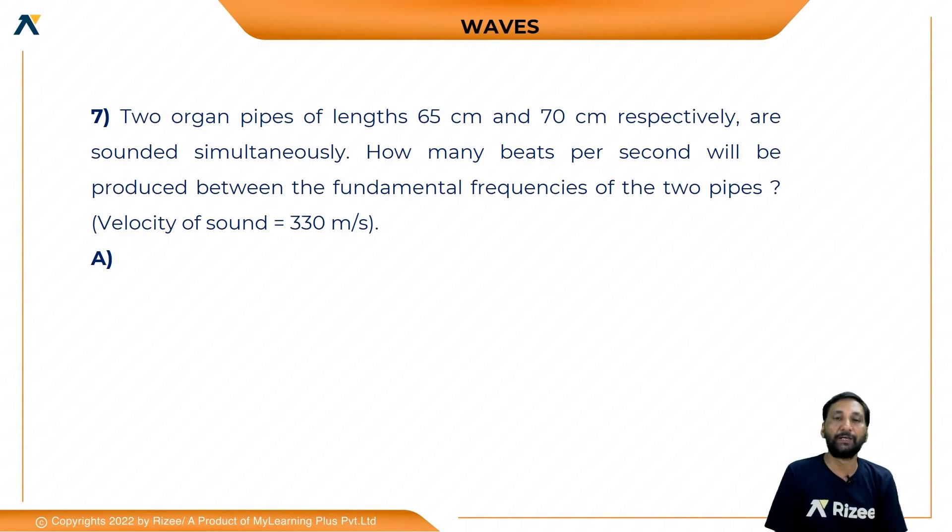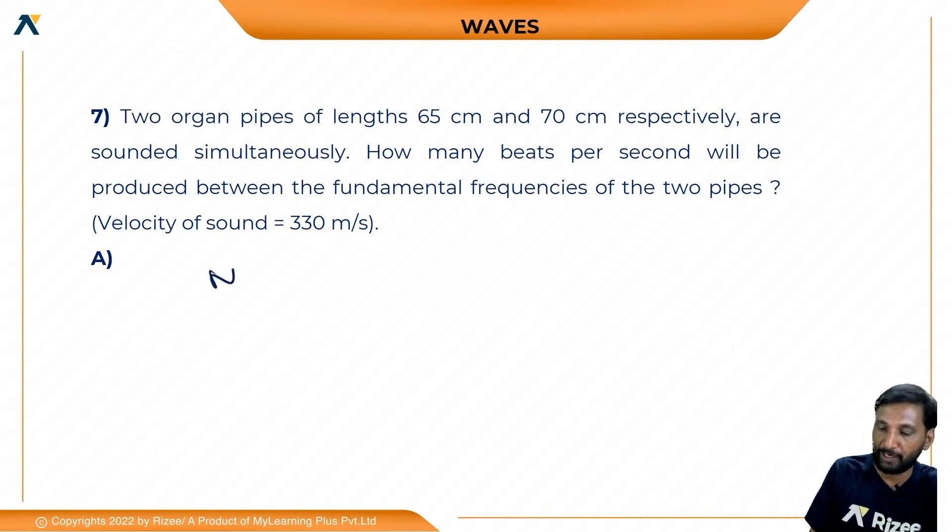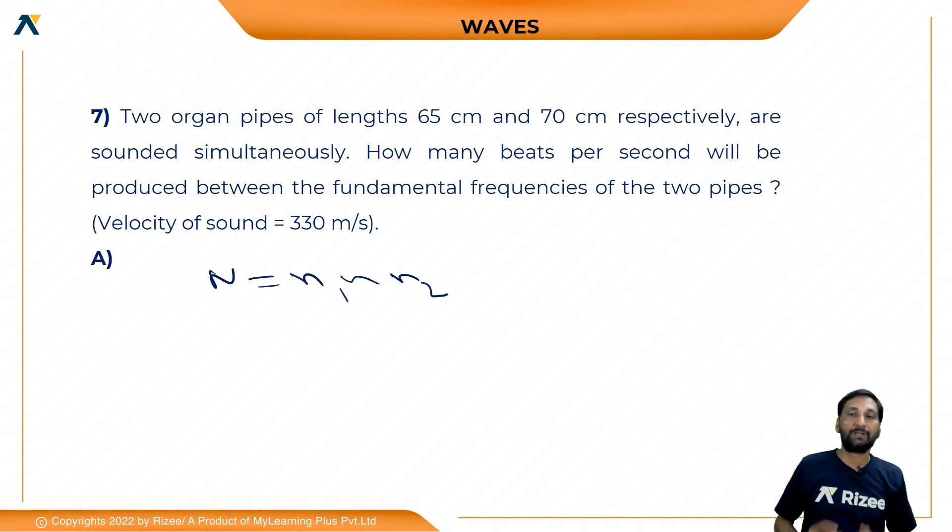Okay, now we have two pipes. One is 65 cm and one is 70 cm. The speed is 330 m/s. We can find the beats using the beats formula which is n1 minus n2. Now the pipe type is very important - open and closed. In general, open pipe is v by 2L, closed pipe is v by 4L.